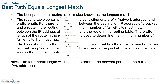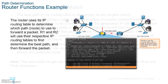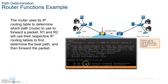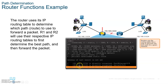If you have equal or multiple matching paths, the router picks the longest prefix match. For example, if one entry is /16 and another is /24, and both match the destination, the router will pick the /24 because it has the longest mask — meaning more bits matched.